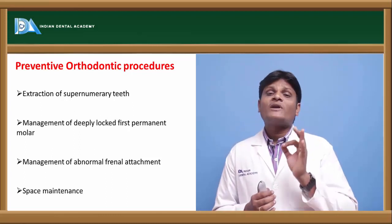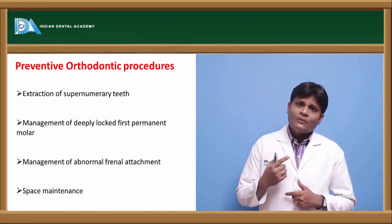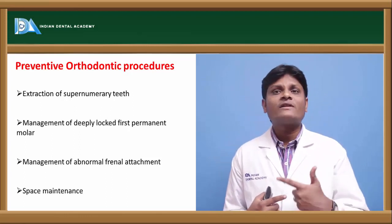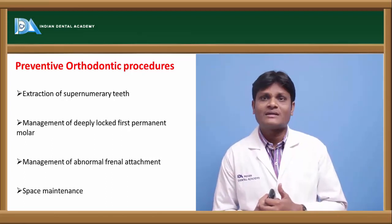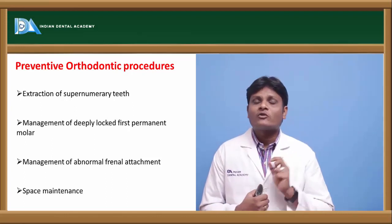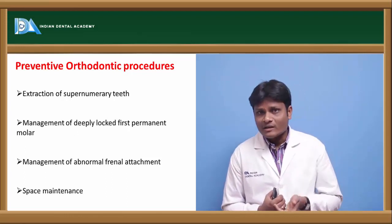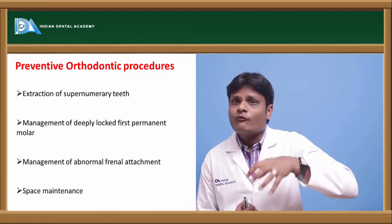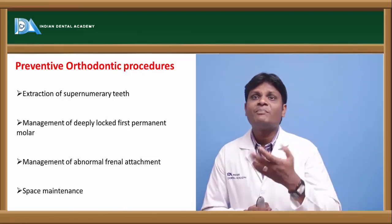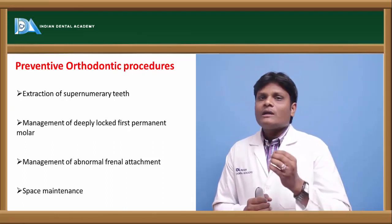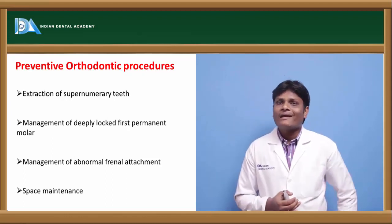An abnormal frenal attachment should be appropriately managed and the attachment relocated by surgical technique. Similarly, in some cases we see tongue tie, where the lingual frenum is abnormally attached. The tip of the tongue cannot touch the roof of the palate, so the tongue cannot optimally clean the oral cavity (its toilet function) and cannot exert its force, contributing to muscle balance. This leads to aberrant development of dental and orofacial structures and also affects speech. If a patient is diagnosed with tongue tie, it should be corrected promptly.